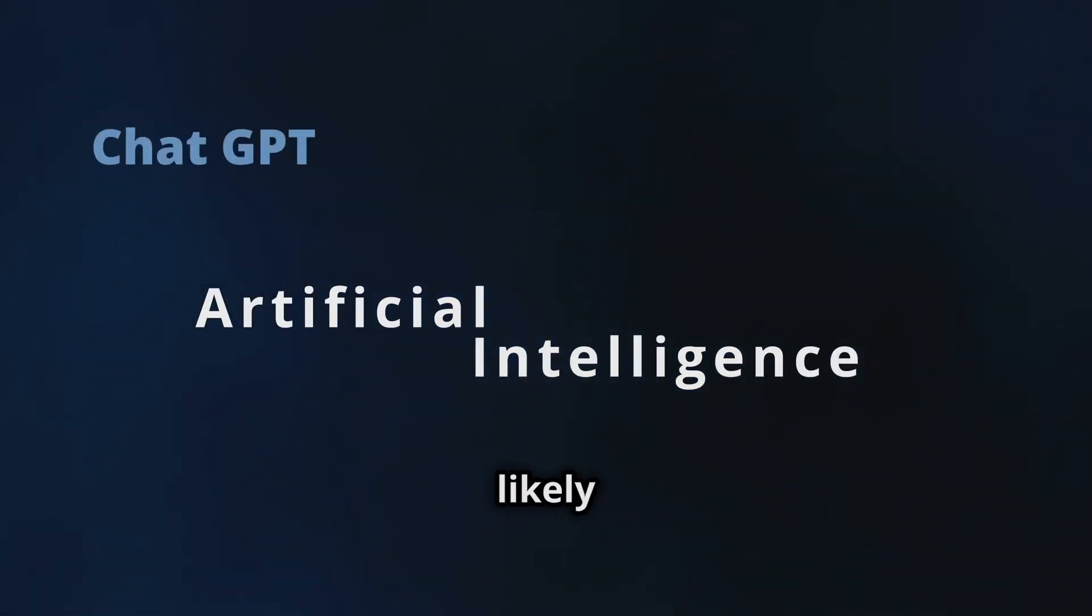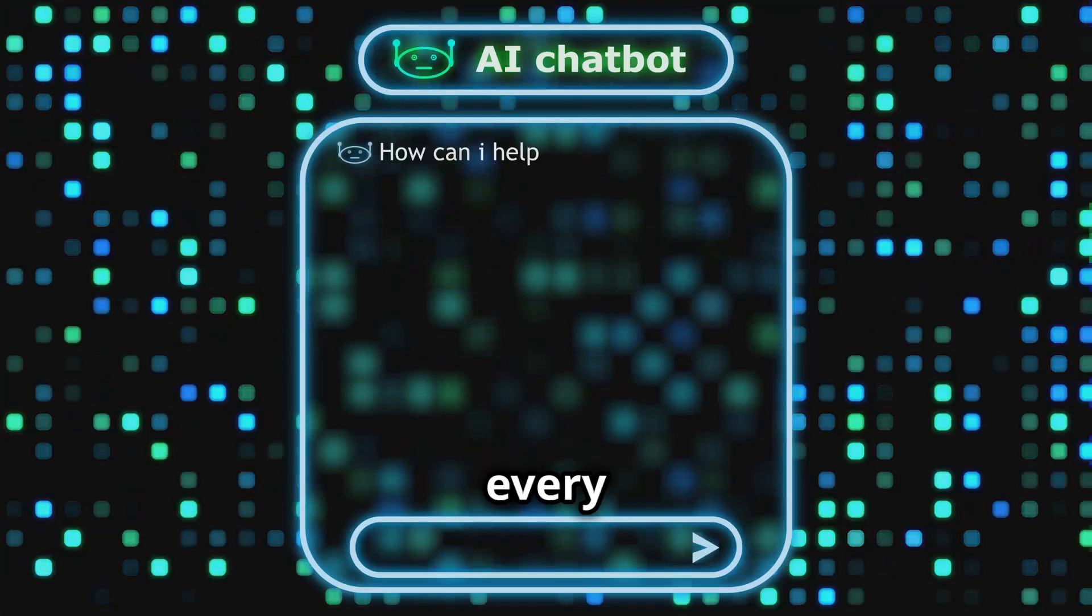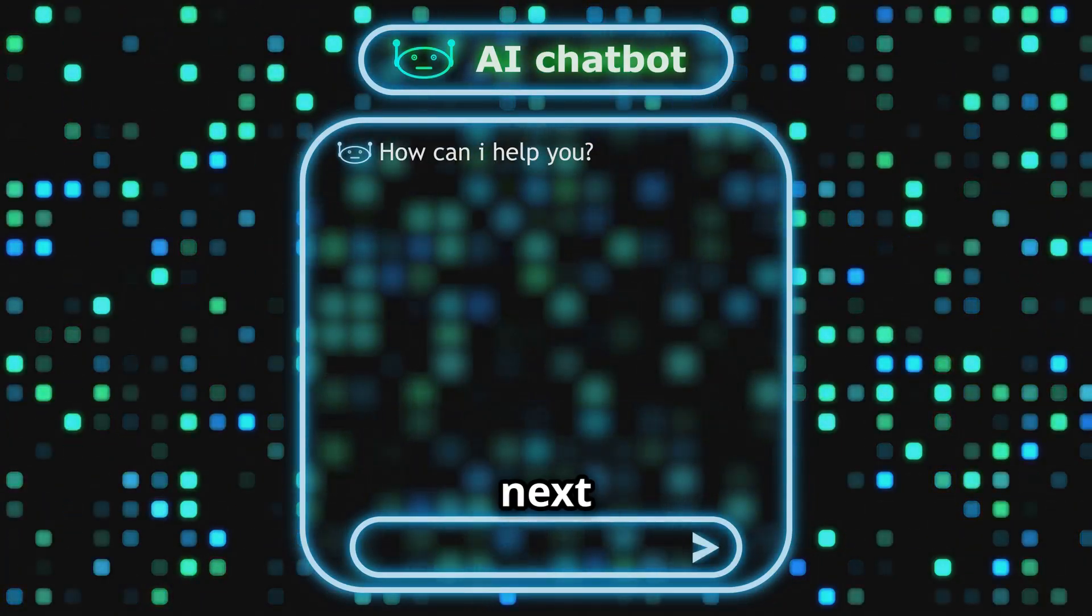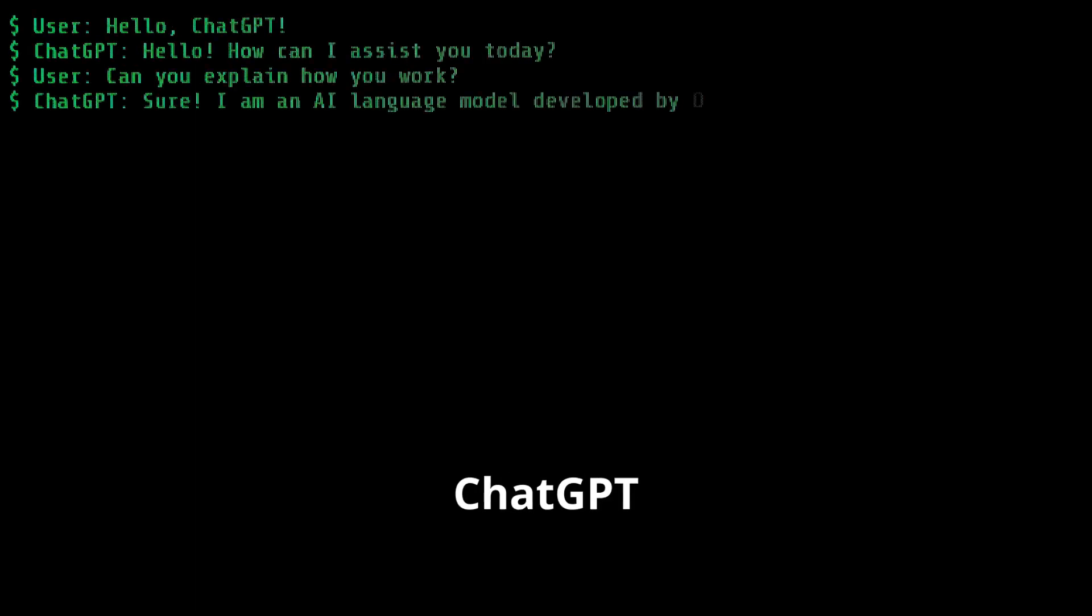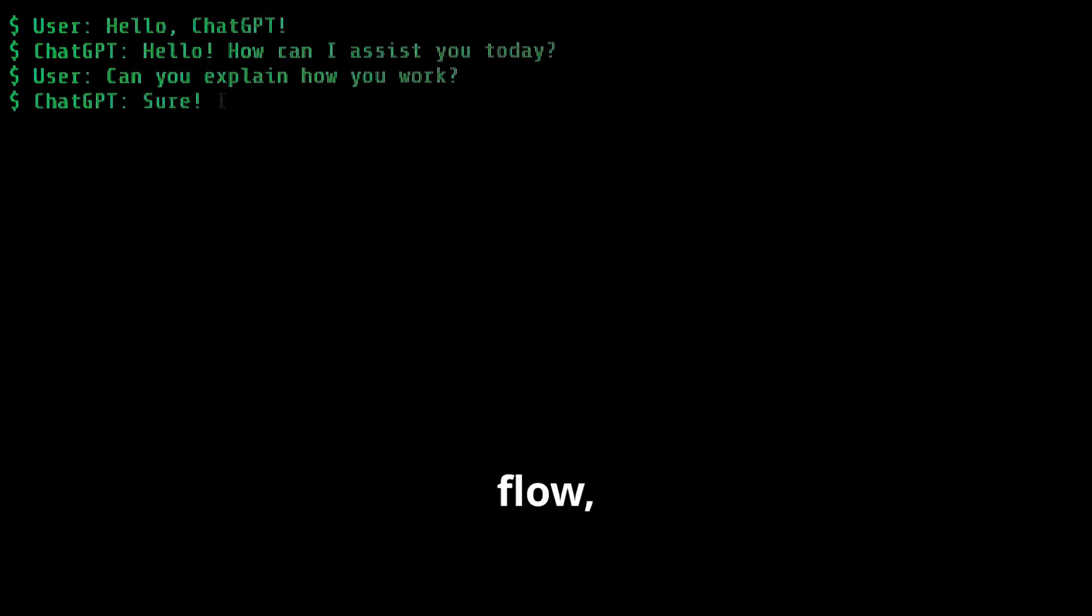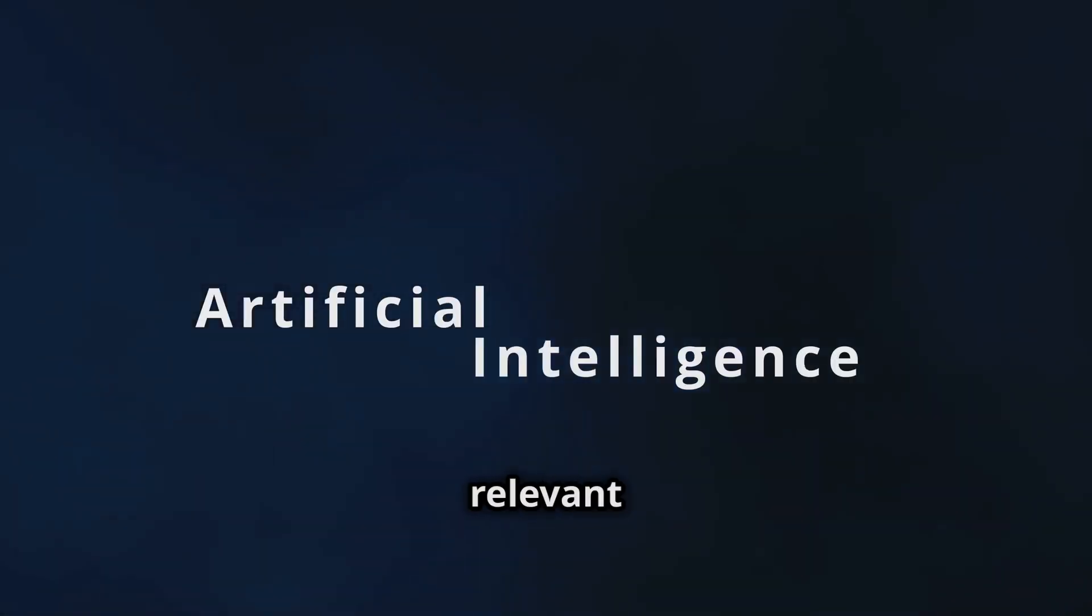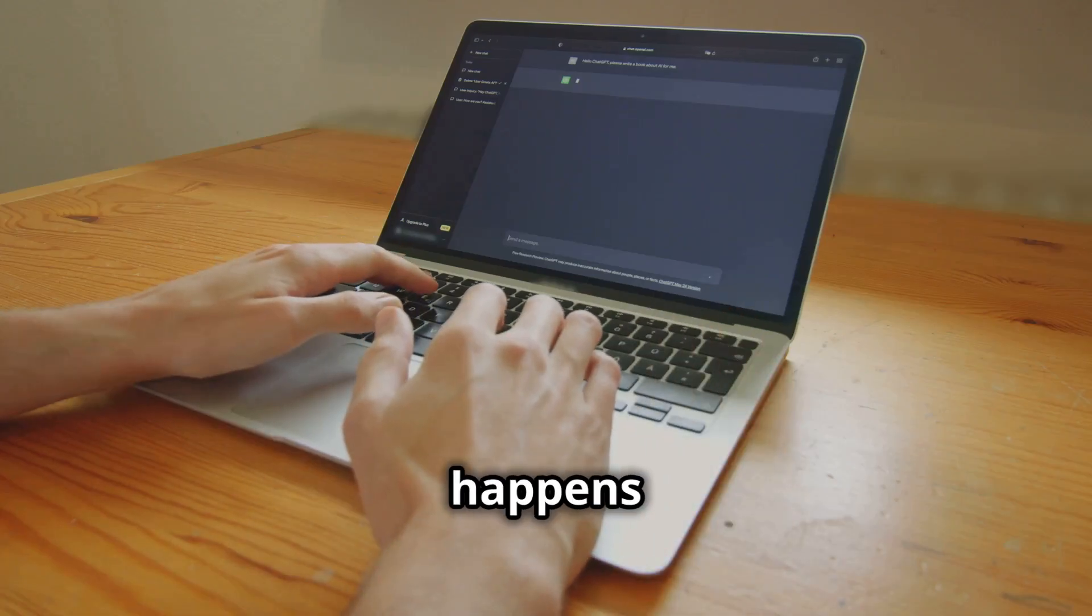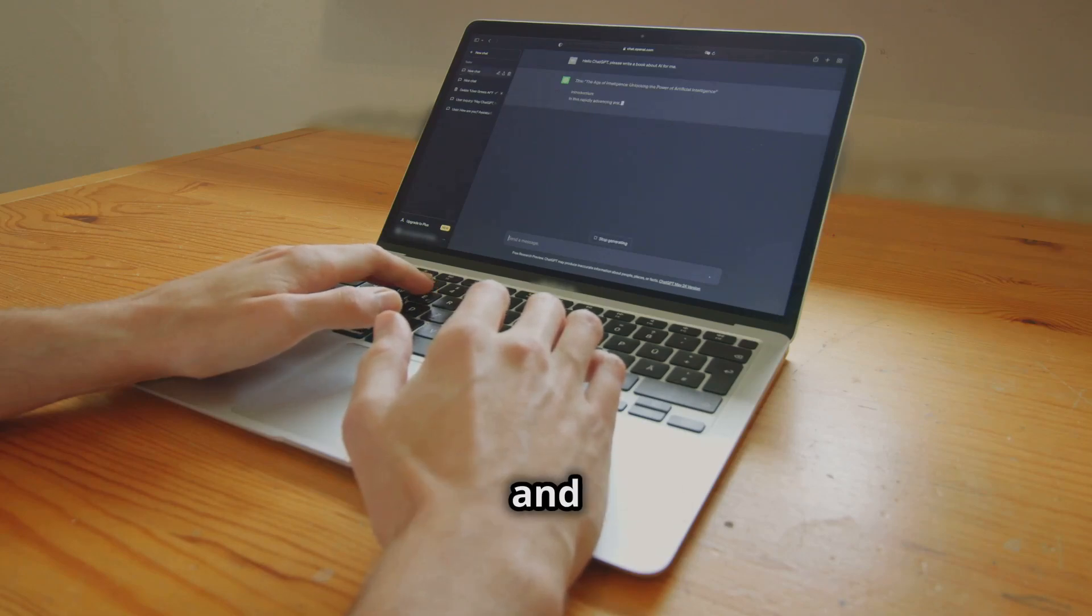Two, prediction. ChatGPT uses its training to analyze these tokens and predict the most likely next word or phrase. For every word it generates, it's like asking what's the most logical next word in this context? For example, if you type why is the sky blue, ChatGPT predicts and builds an answer based on its understanding of atmospheric science, language flow, and how similar questions have been answered before. Response generation. The AI doesn't just give you random facts. It combines everything it knows to form a coherent and relevant response. This happens in milliseconds, making the interaction feel natural and instant.